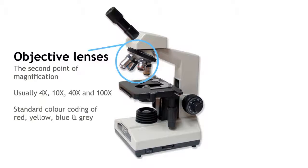The 4x is red, 10x is yellow, 40x is blue, and the oil immersion lens 100x is grey.